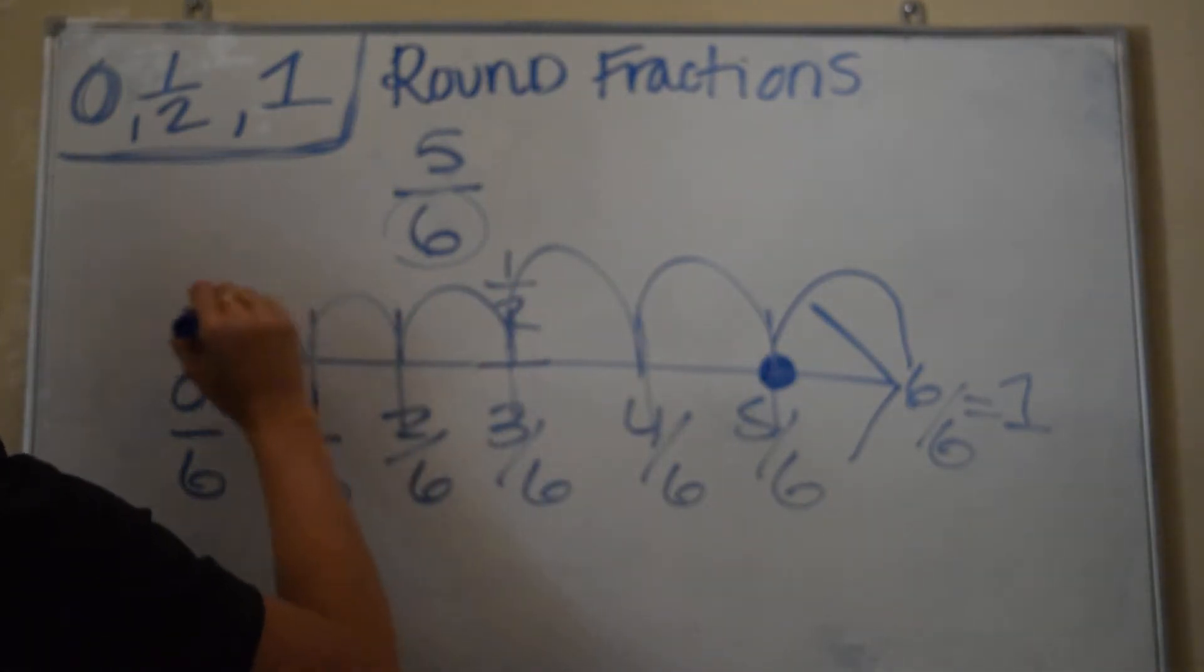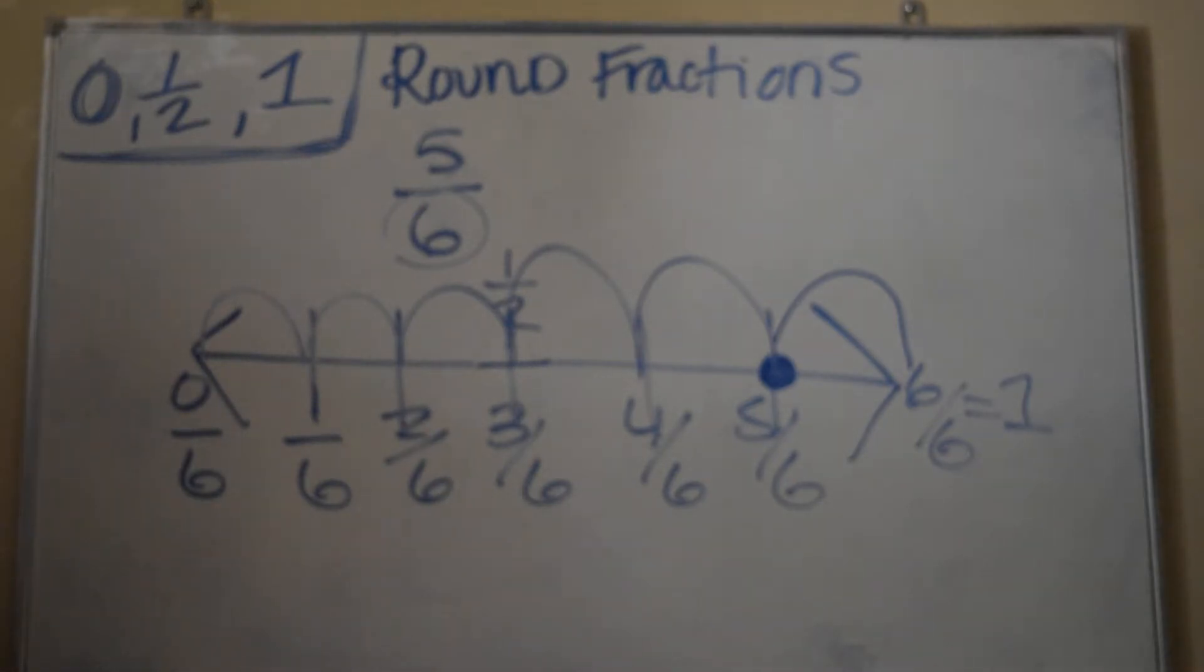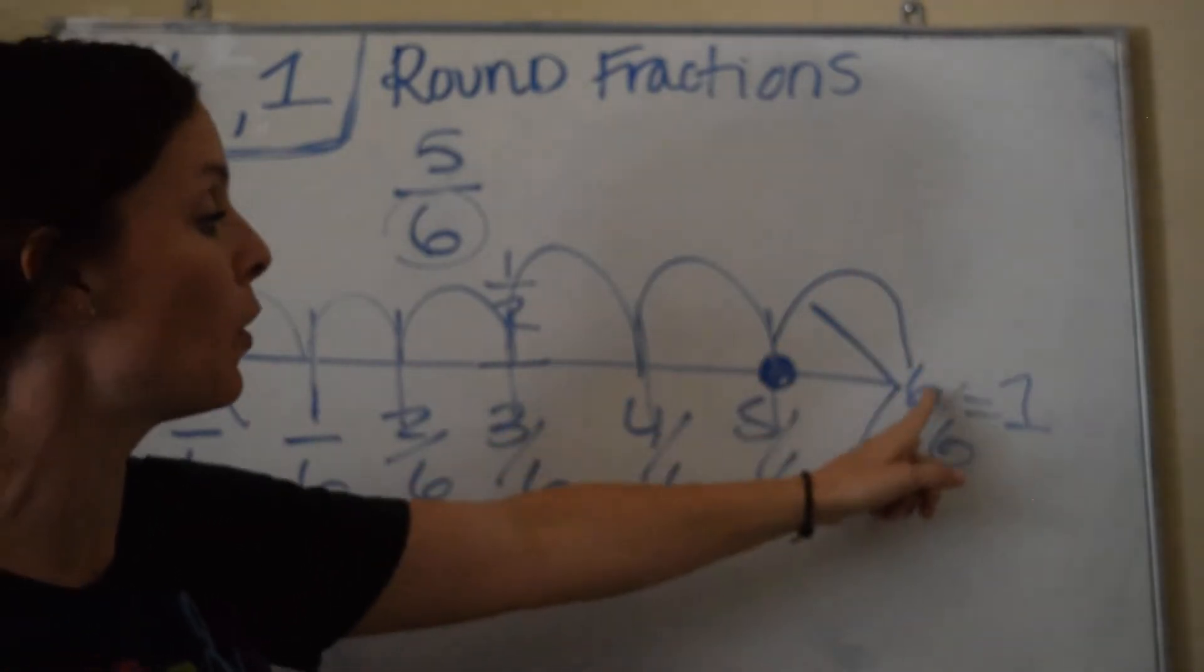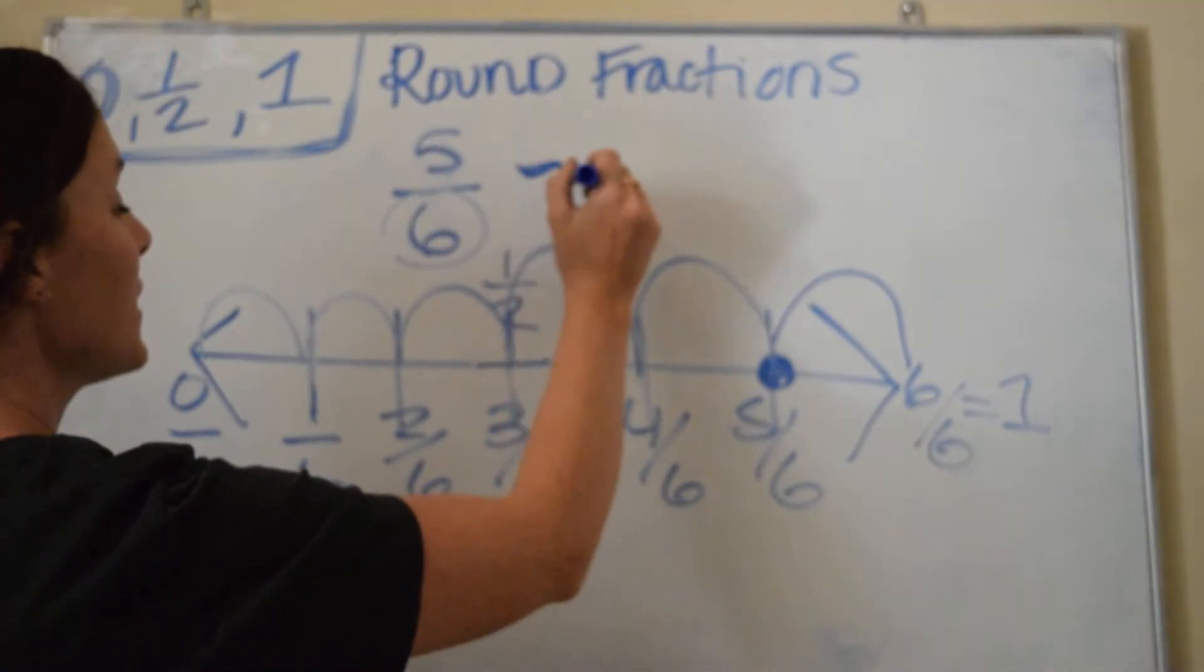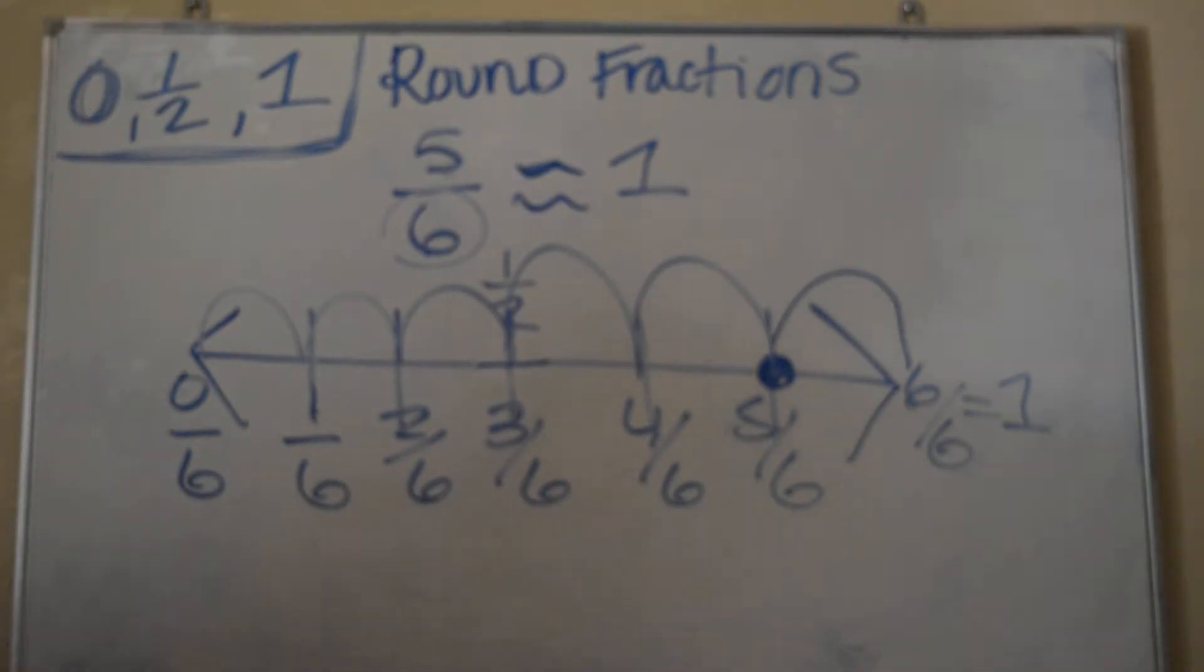And five spaces from a zero. Remember, we're either going to round it to one of these three. So it's closest to a whole. So we're going to say 5/6 is rounded up to one whole.